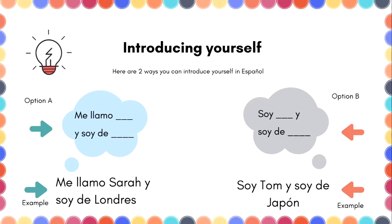Excellent. Now let's check Option B. Option B says: soy, add your name in the space, then y soy de, and in that space you add your country or city. For example: soy Cefania y soy de Venezuela.